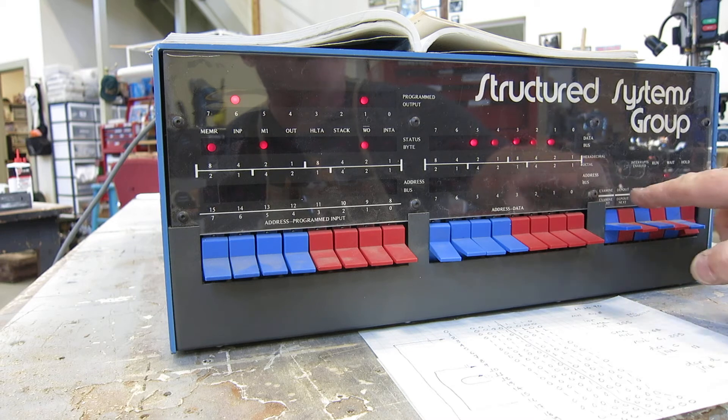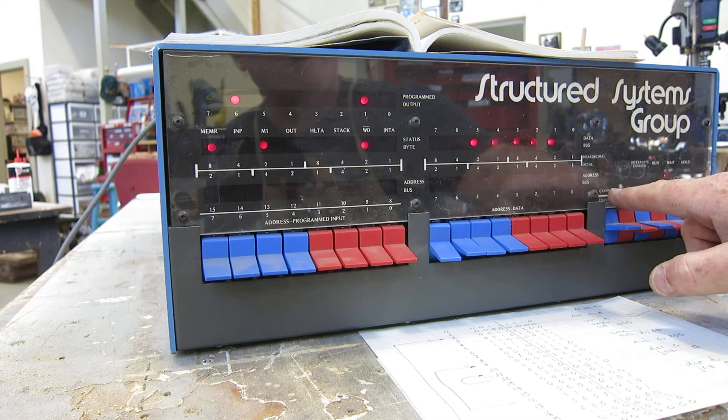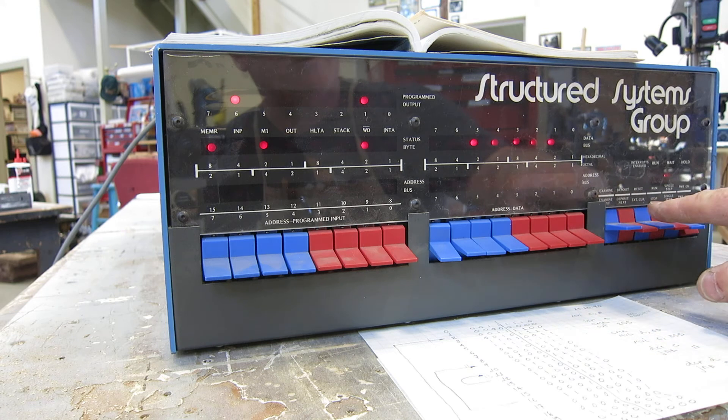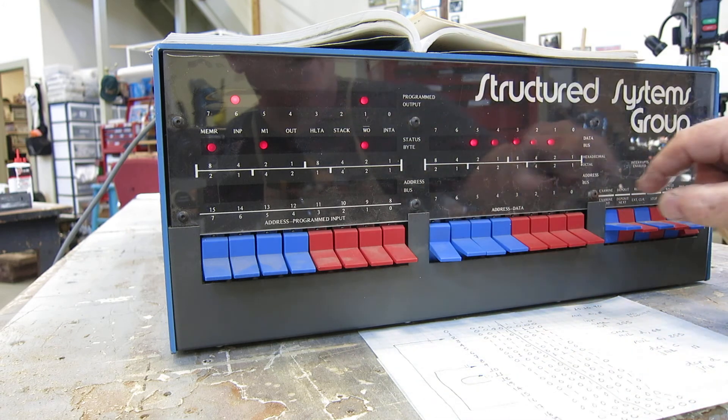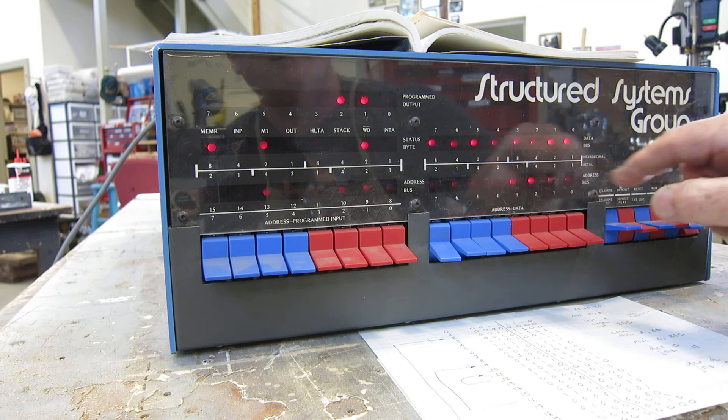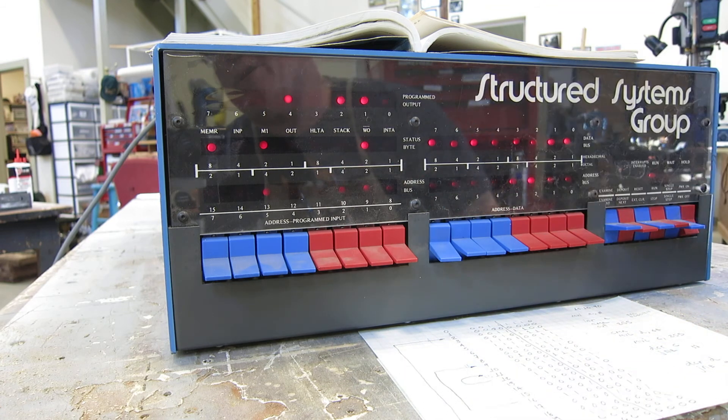And then if I say, it's now, because I examine 0, it means the address registers at 0. So if I now say run, it'll begin to execute the program, and you'll see the output up here. So if I say run, there it is. It's counting in binary.